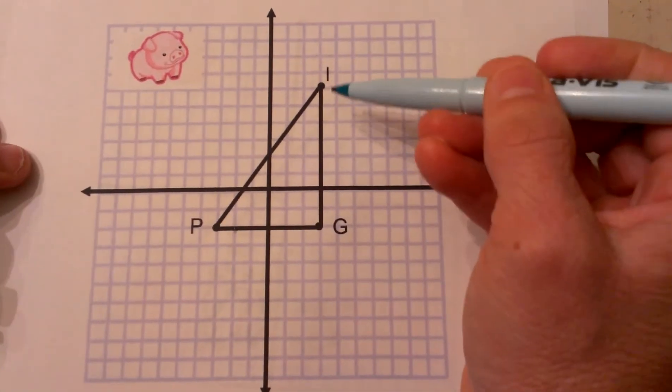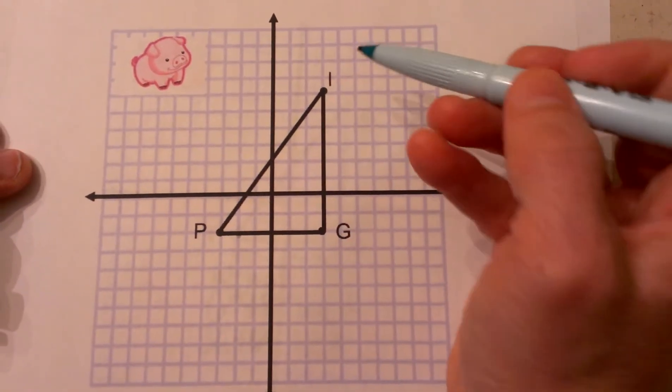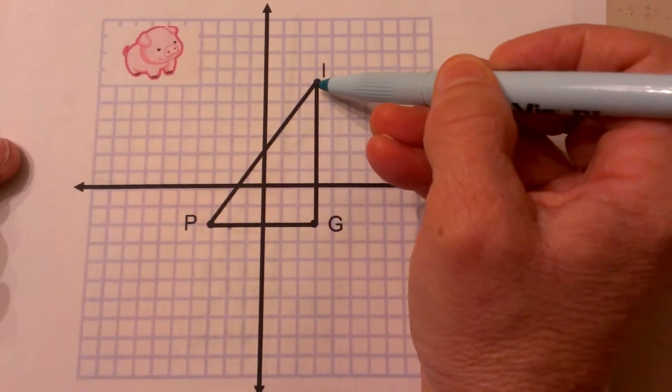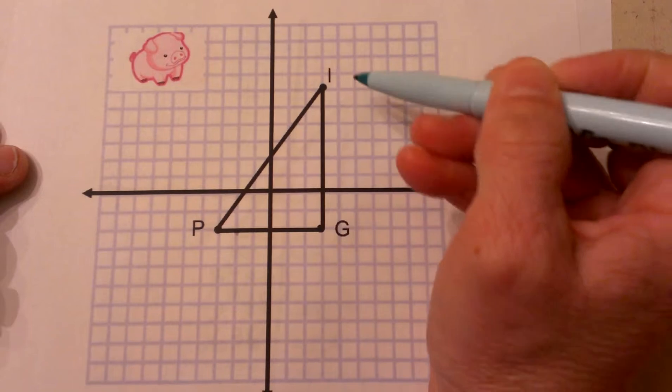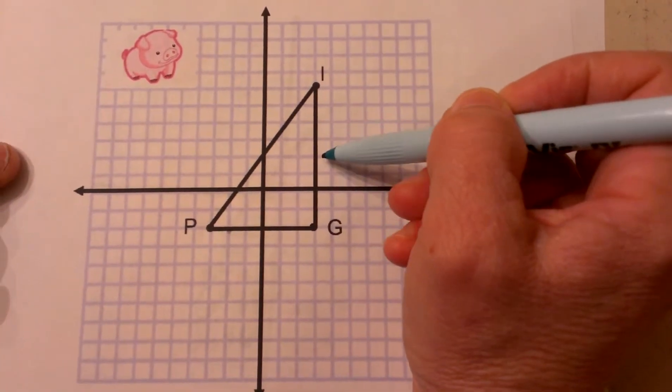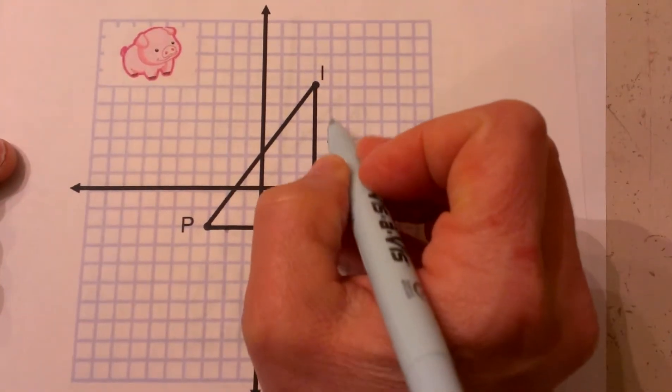The vertical side which is IG is very easy to find the distance of. All you need to do is count the blocks. So I'm going to count from I to G: 1, 2, 3, 4, 5, 6, 7, 8. So that is 8 units long.